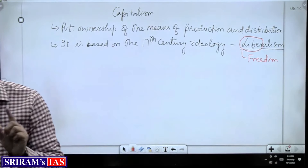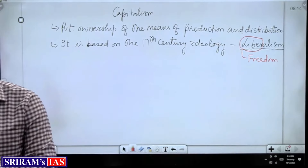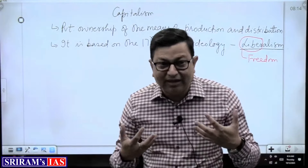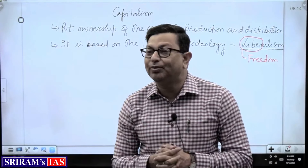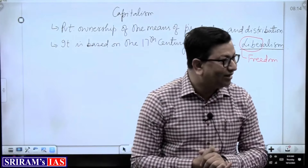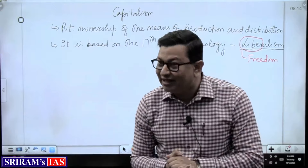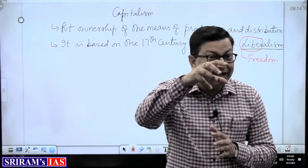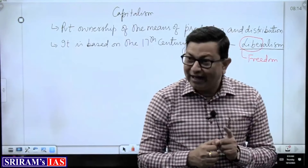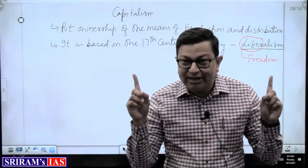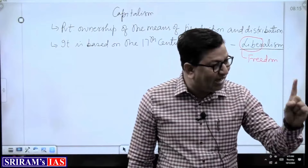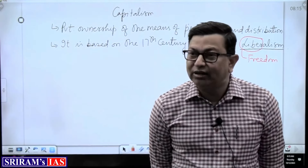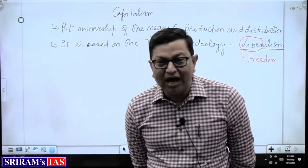Why has freedom been given to you by your parents to go to Delhi and attend classes? Because they have faith in your rationality. The moment the system finds that we are misusing freedom, there is a curtailment of individual freedom. Why is Section 144 imposed? Why is curfew imposed? Why are shoot-at-sight orders given? Because there is a question mark on our rationality.